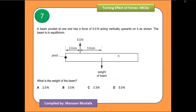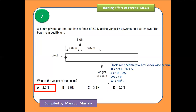The next question is the same type. By identifying the pivot point and putting in the values, solving for W gives an answer of 2 newtons.